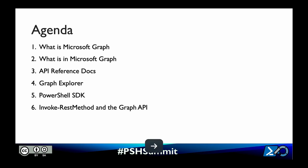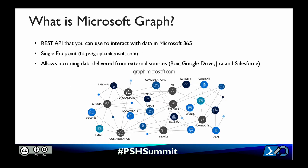So what is the Microsoft Graph? The Microsoft Graph is a REST API that we can use to interact with our data in Microsoft 365. REST stands for Representational State Transfer, and a REST API uses HTTP protocol. We can get, put, post, patch, and delete data — we're going to be learning more about those API methods in our upcoming demo.